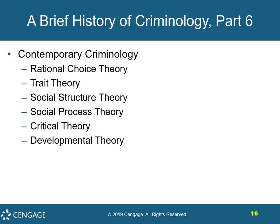Now we'll look at contemporary criminology. This involves rational choice theory — people are able to make rational choices and are not doomed to commit crime. There's also trait theory, which states that if your father is a criminal, you are therefore doomed to be a criminal, which we know is not necessarily true. There's also social structure theory, social process theories, critical criminologists, and developmental theorists, all playing a role in the ongoing discussion of criminology.